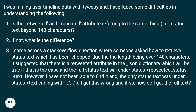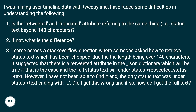It suggested that there is a retweeted attribute in the JSON dictionary which will be true if that is the case, and the full status text will be under status.retweeted_status.text. However, I have not been able to find it, and the only status text was under status.text ending with ellipsis. Did I get this wrong and if so, how do I get the full text?